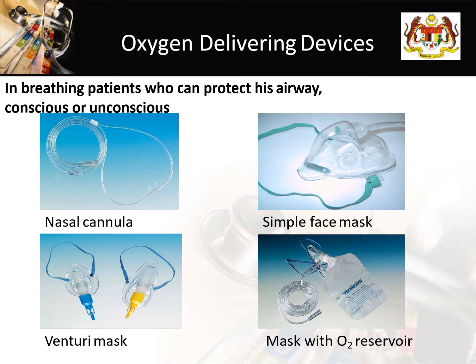Next is our high-flow mask, or mask with oxygen reservoir. You can deliver 10 to 15 liters of oxygen per minute. There are two types of high-flow masks: the rebreather and the non-rebreather, depending on whether there is a valve or not. We will show this at the skills station later.